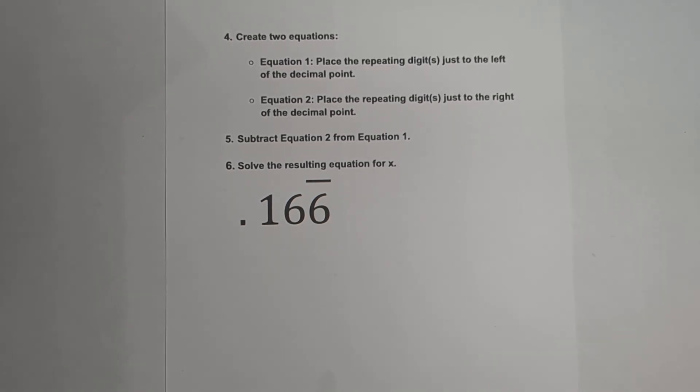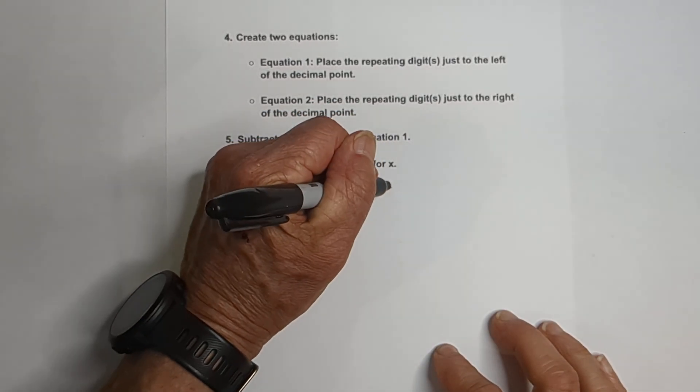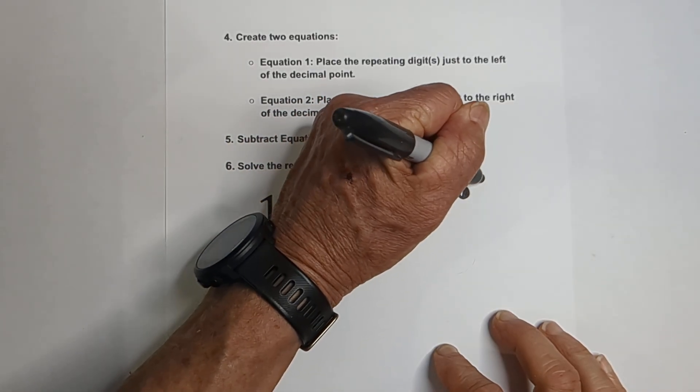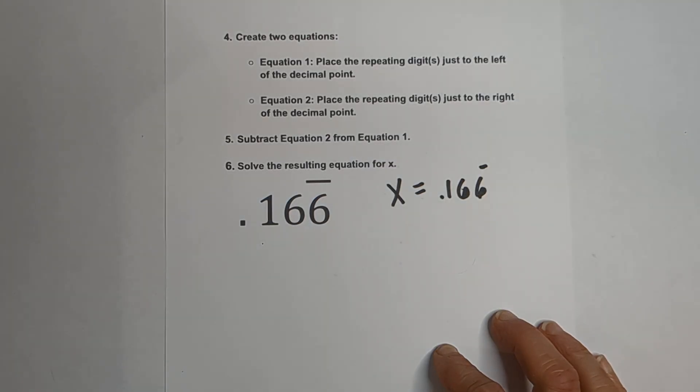So let's go over this and I think it will make some sense to you. Let's first, it's going to be x equals 1 and 6, 6 repeating.